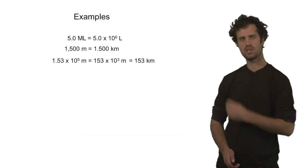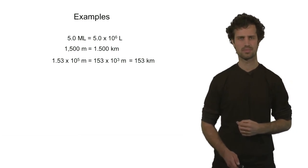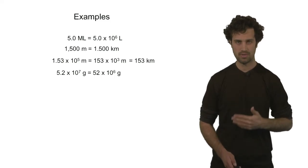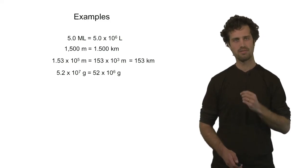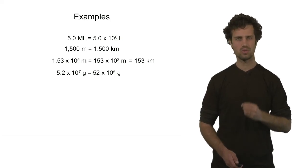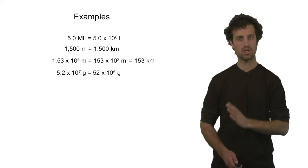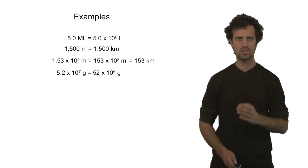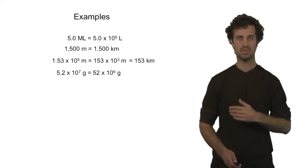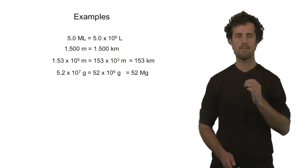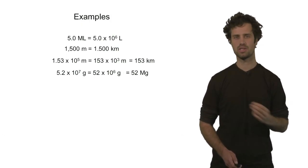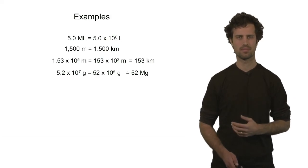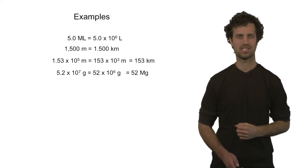Note that this number is not in scientific notation. Next, 5.2 times ten to the seventh grams can be rewritten as 52 times ten to the sixth grams by moving the decimal point one position. 52 times ten to the sixth can be rewritten as 52 megagrams, because ten to the sixth means mega. This number is also not in scientific notation.